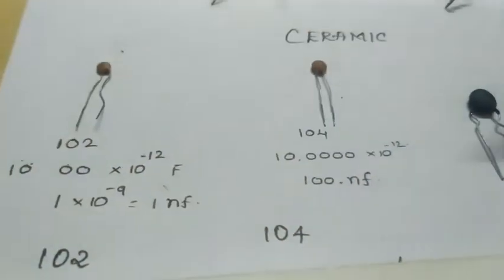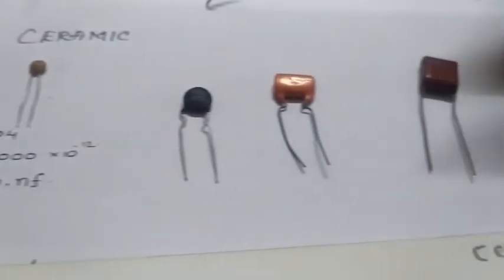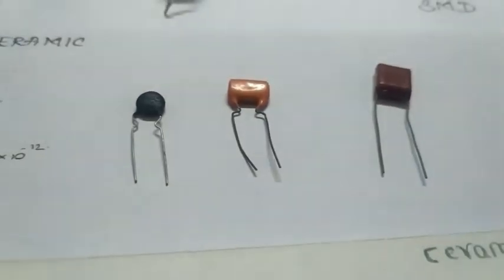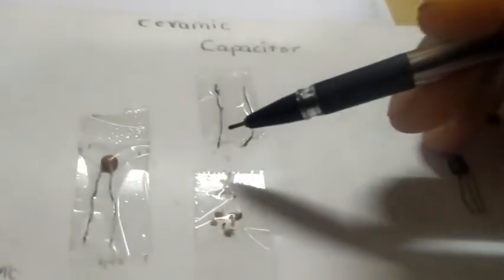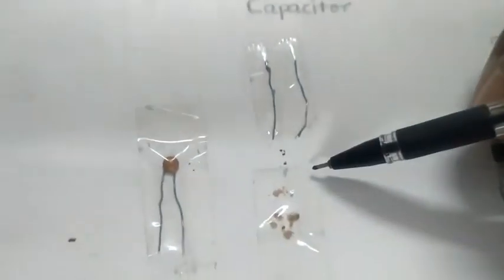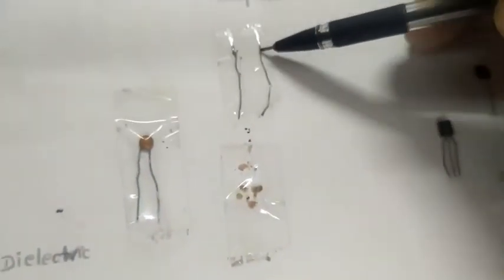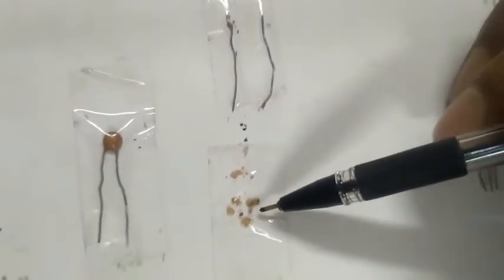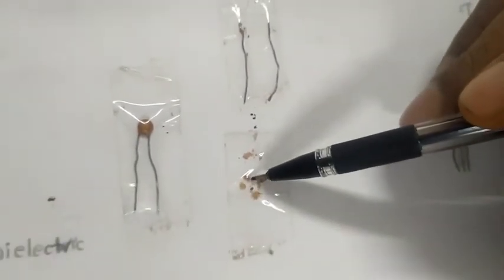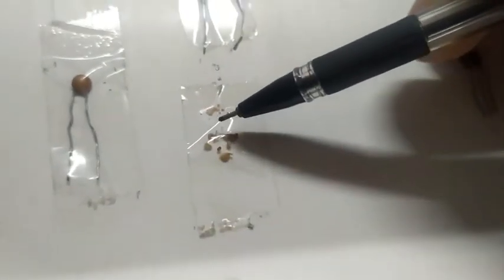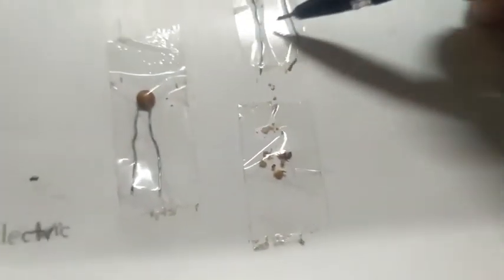When you break the ceramic capacitor, like this 102, when you break this we get some two things and we have a simple plate, the capacitor plate. There will be a gap between the plus and minus lead.